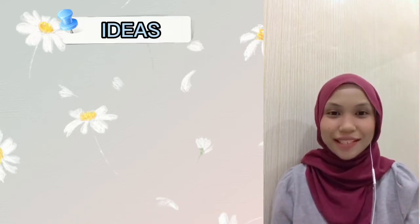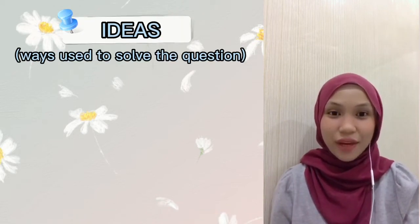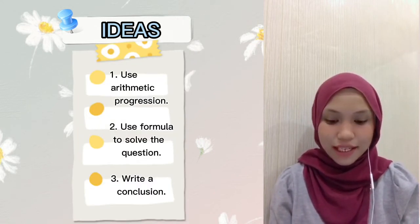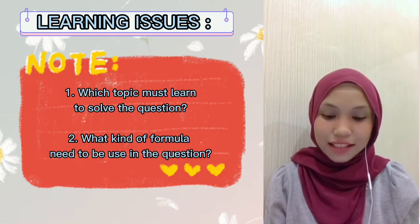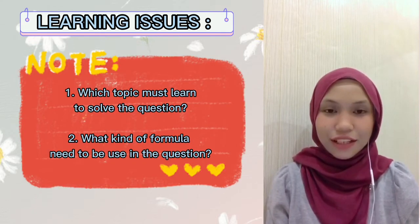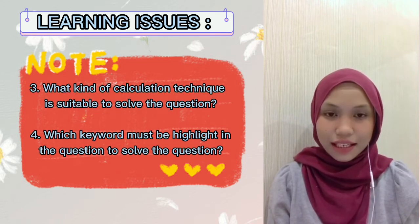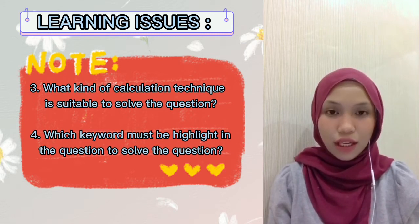Moving to the next column, Ideas — these are the ways we use to solve the question. First, use arithmetic progression. Second, use the formula to solve the question. And lastly, write a conclusion. The third section is Learning Issues. We have four issues: which topic must be learned to solve the question, what kind of formula needs to be used, what kind of calculation technique is suitable, and which keyword must be highlighted in the question.